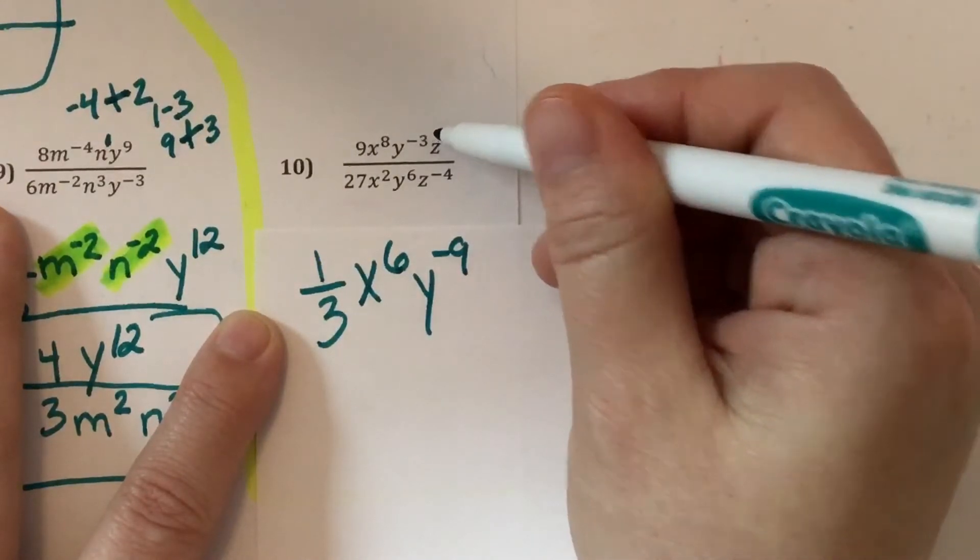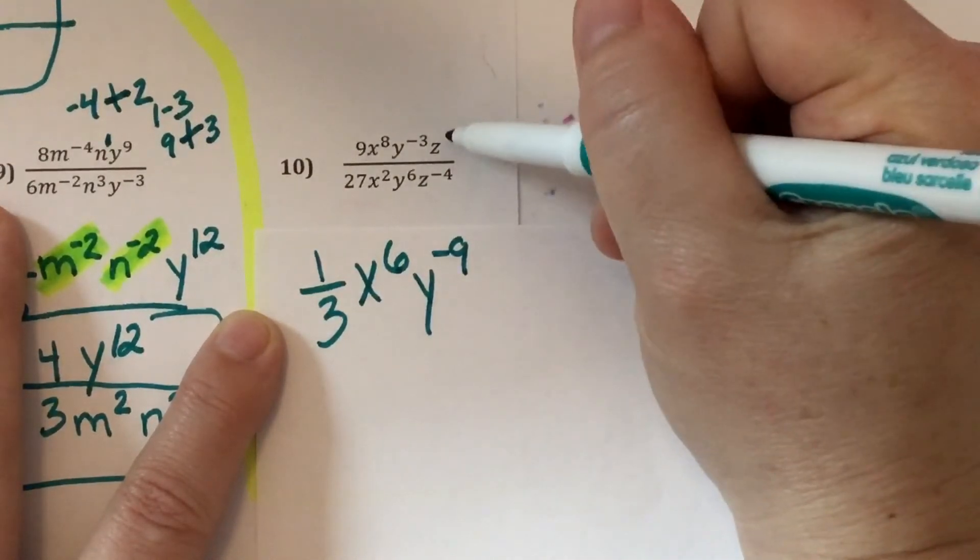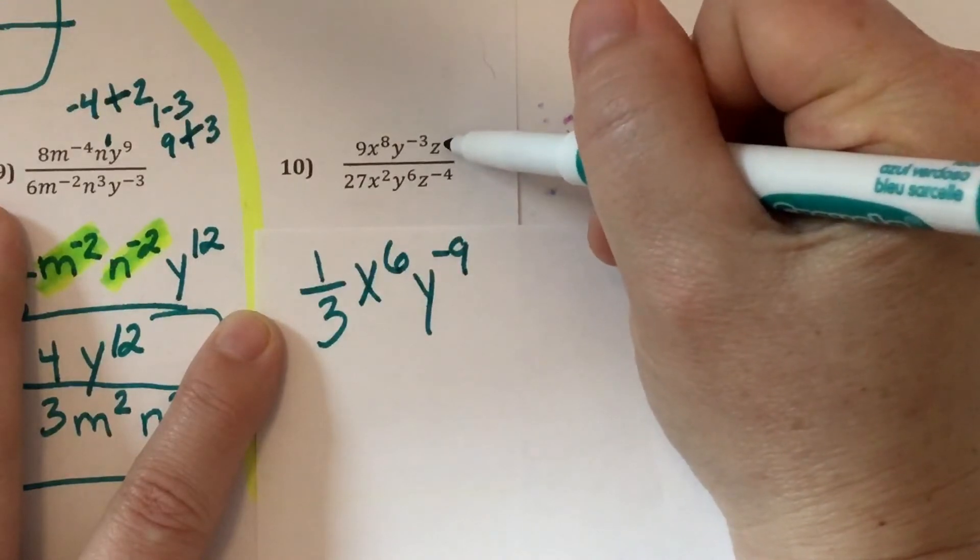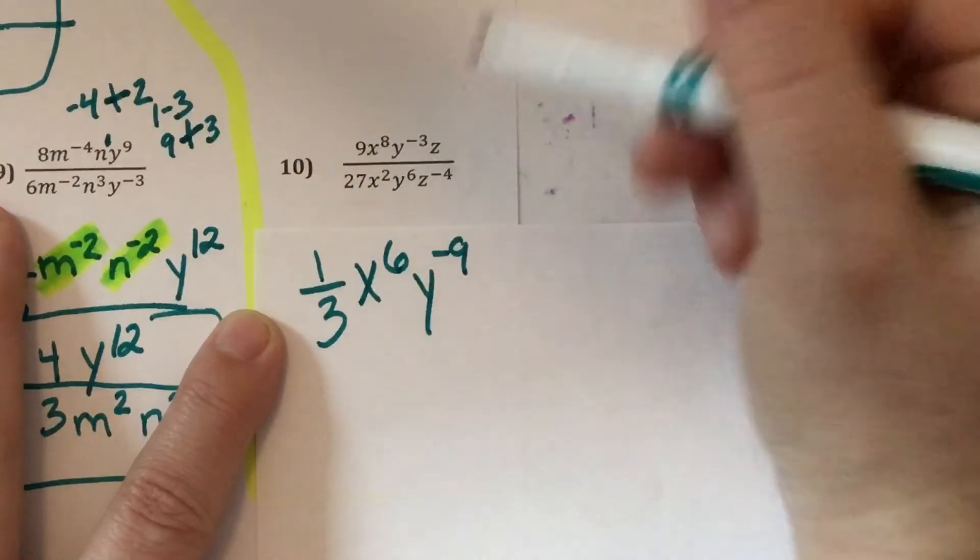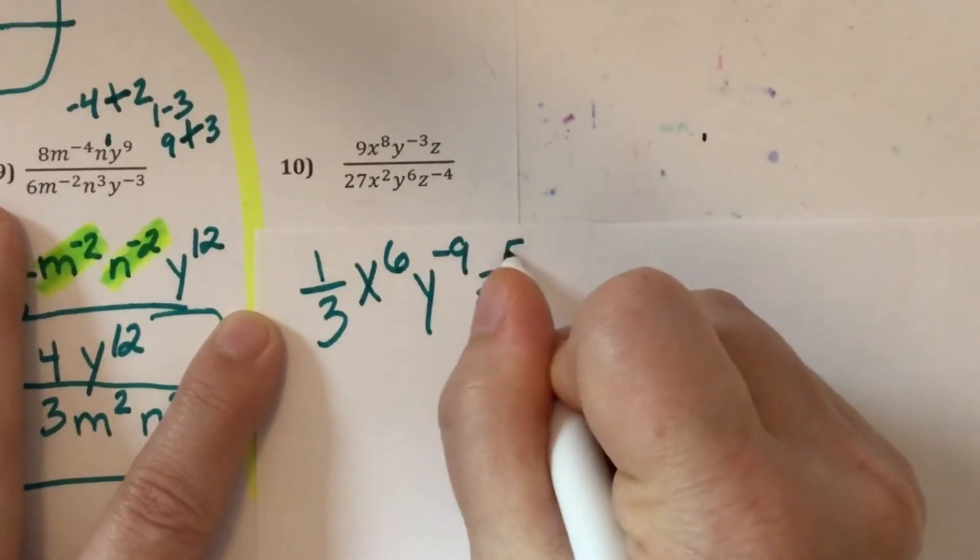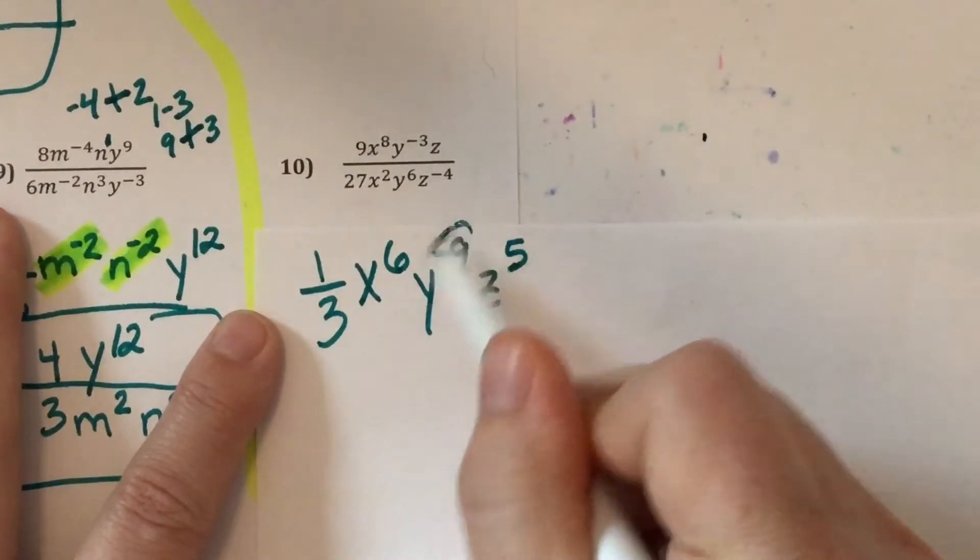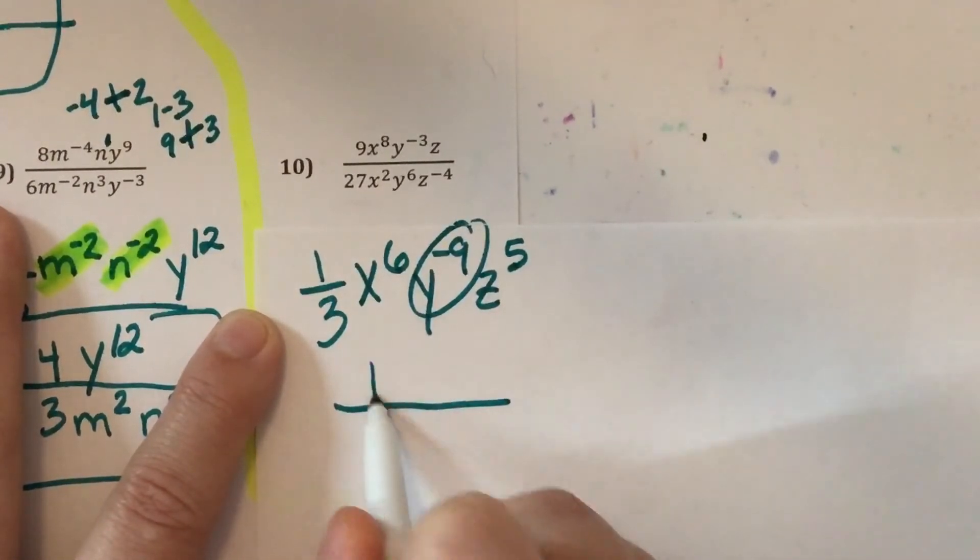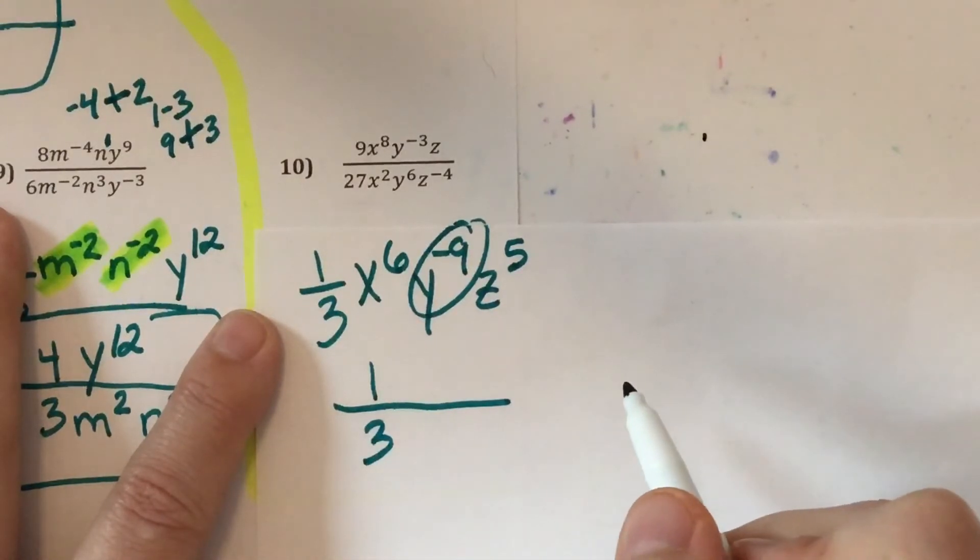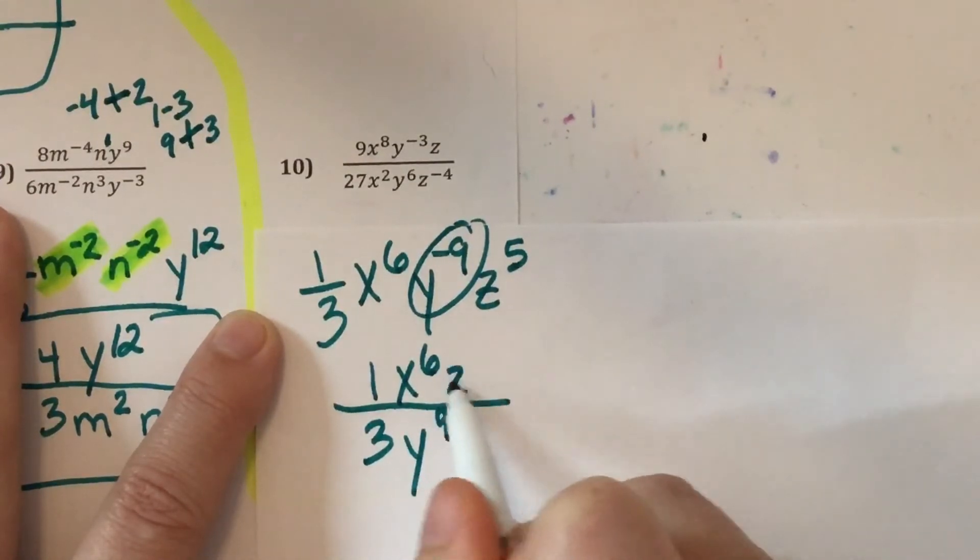Put it in your calculator if you have to. Negative 3 minus 6. And then there's a 1 here. So 1 minus negative 4. That makes 5. So who has to move? The Y. So 1 third gets written like that. The X stays put. The Y drops. The exponent switches to a positive 9. And the Z stays put.